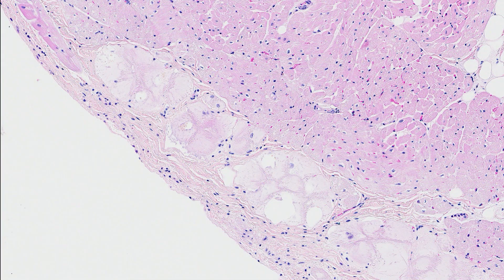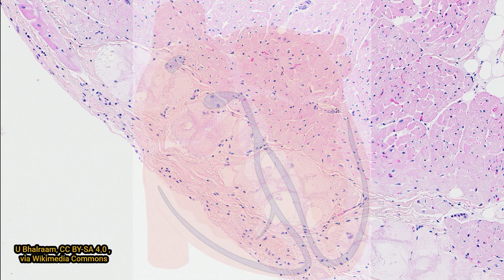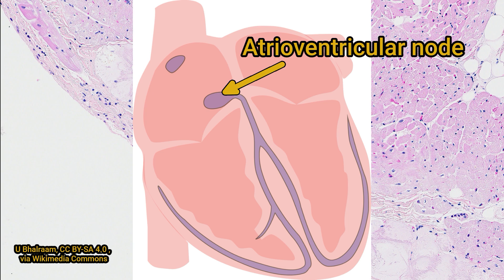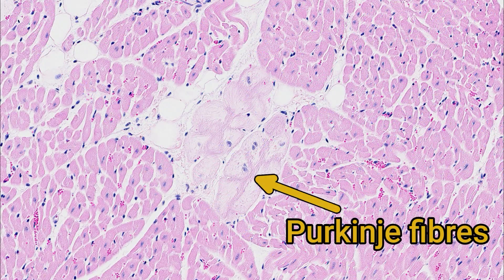Just under the endocardium, you'll often find Purkinje fibres. These are modified cardiomyocytes that carry electrical signals from the atrioventricular node to the apex of the ventricles without exciting the surrounding muscle. They're usually separated from other cardiomyocytes by fibrous tissue to insulate the electrical signal. Occasionally, you can find them in the cardiac muscle interstitium, also surrounded by thin sheets of collagen.